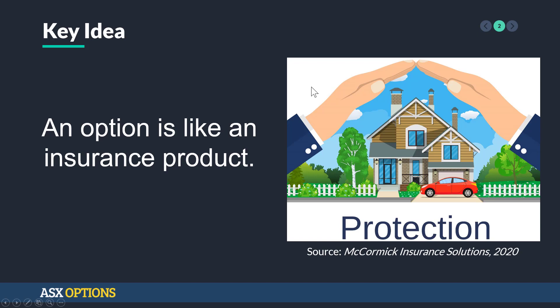An option is like an insurance product. Perhaps the most familiar type of options contract, and it's closest to home. Insurance in many ways is like a put option. For example, a homeowner who purchases insurance has the right to sell all or part of the home back to the insurance company at a date in the future. So if the home gets flooded, burns down, etc., you, the homeowner, will inform the insurance company that you'd like to sell the home for the insured amount.